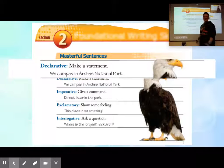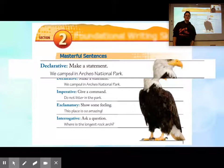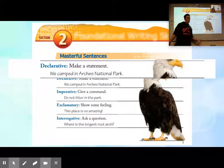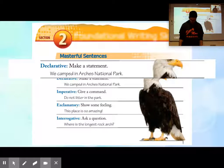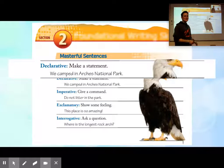The first one is declarative. This one makes a statement, right? You're just telling someone a fact. We camped in Arches National Park. That's it, it's a statement. I have on shoes, there's lights on in my room, I had two cups of coffee this morning. Those are all declarative sentences.